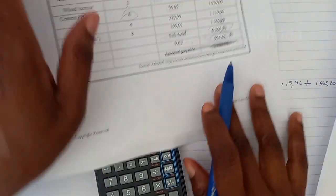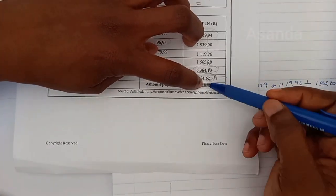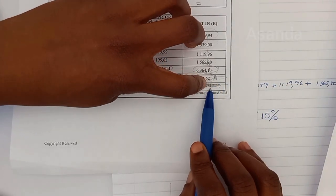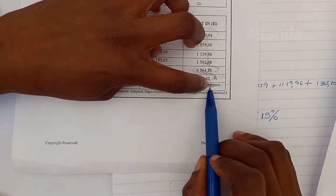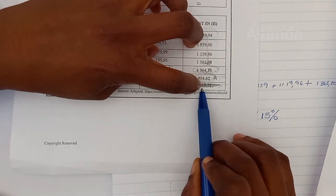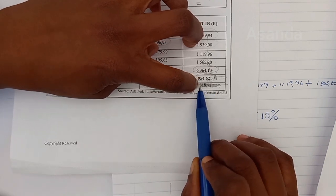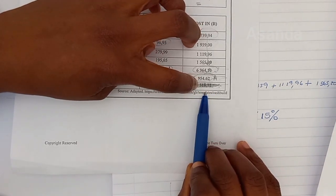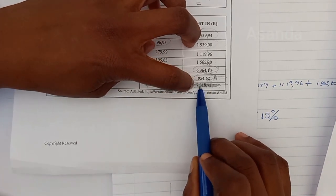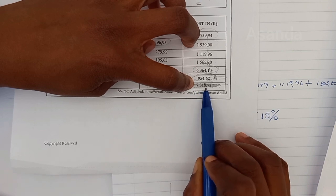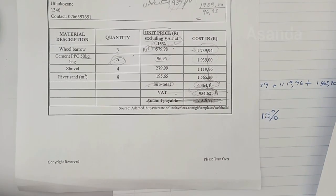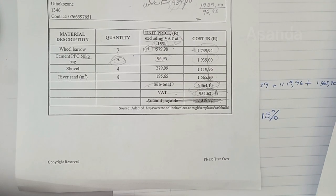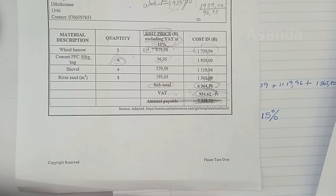Question 1.2.8: write down the amount payable in words. Reading from the invoice: the amount payable is R7,318 rands and 72 cents. That was the last question for question 1. We'll be doing question 2 soon — look out for that.